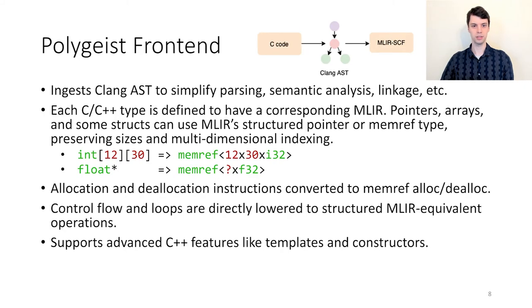Polygeist uses Clang's abstract syntax tree as a starting point for its compiler, allowing it to use existing stable routines for parsing, semantic analysis, linkage, and so on. Polygeist must then define the corresponding MLIR type that matches the C or C++ type. Pointers, arrays, and some structs can use MLIR's structured pointer or memref type, allowing Polygeist to directly preserve existing sizes and multidimensional indexing. Polygeist identifies any allocation or deallocation instructions within the program and converts them to memref-appropriate equivalents. Most control flow statements such as conditionals or loops can be directly lowered to equivalent MLIR operations. Notably, Polygeist supports advanced C++ features like templates and constructors.